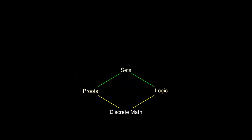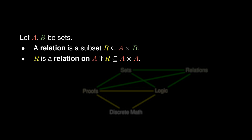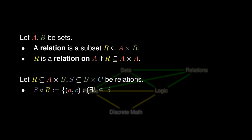We can use sets to define relations, which we can prove using logic and proof techniques as well. A relation is simply a subset of the Cartesian product — it consists of ordered pairs where the first coordinate belongs to A and the second coordinate belongs to B. We say that R is a relation on A if R is a subset of A cross A. Given two relations R and S, we can define their composite relation, which allows us to find links from items in A to items in C.